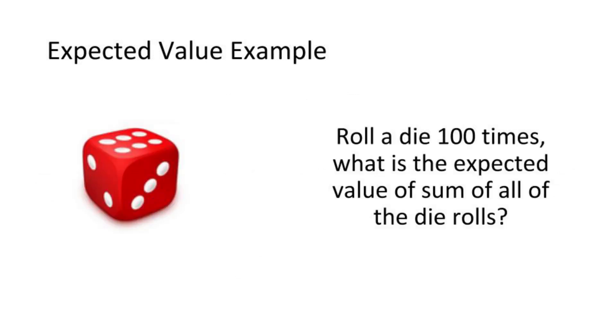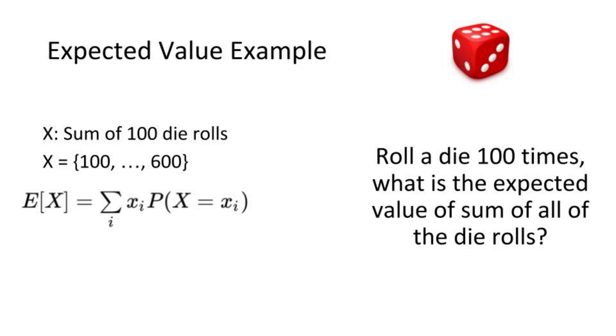Now let's say you roll a die 100 times and you want to know what is the expected value of the sum of all of the dice. You could do this the long way where you write out all possible outcomes, which could be any integer from 100 to 600, and then calculate the probability of each outcome occurring.